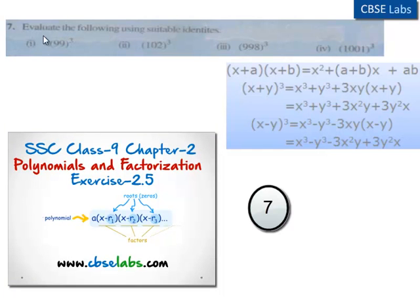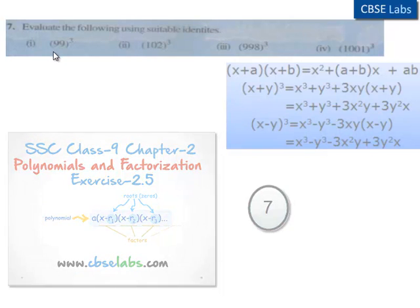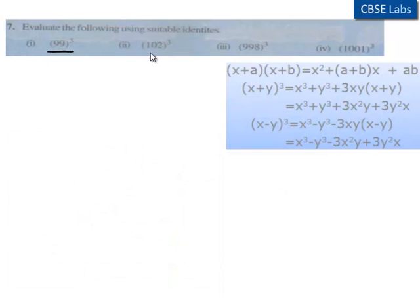Coming to the 7th problem, evaluate the following using suitable identities. First one is 99 cubed, second one is 102 cubed, third one is 998 cubed, fourth one is 1001 cubed.